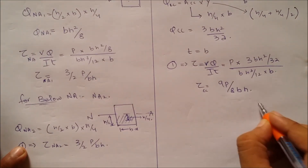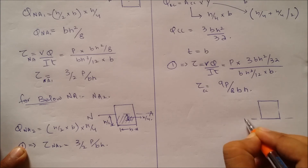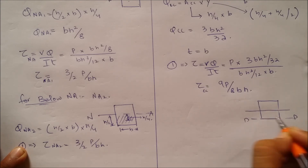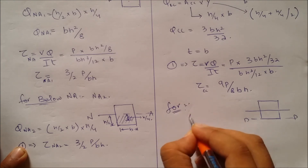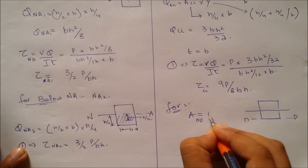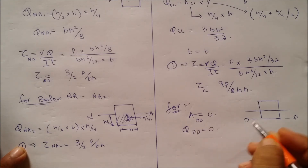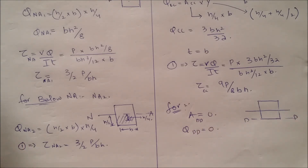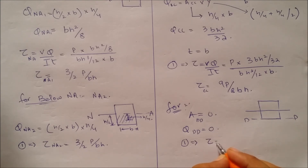For section DD, the area is equal to zero, so Q_DD equals zero since Q is the product of area times distance Y. Hence, substituting into equation 1, τ_DD equals zero.